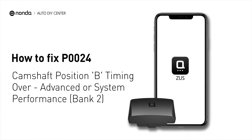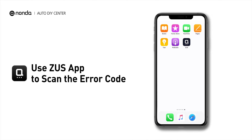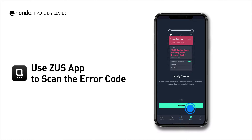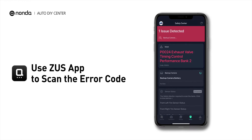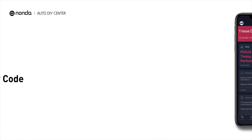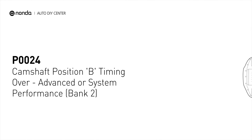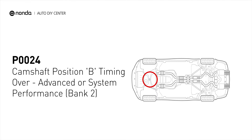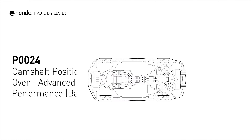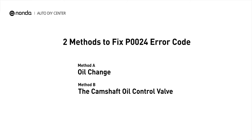If you are getting a P0024 error code, this video is going to show you two practical solutions to fix the error code at home. Use the Zeus app to scan your vehicle and see the error code P0024. It indicates the ECM has determined that the intake camshaft timing for bank 2 is more retarded than what the ECM has commanded it to be. Here are two simple DIY methods you can try to solve this problem.